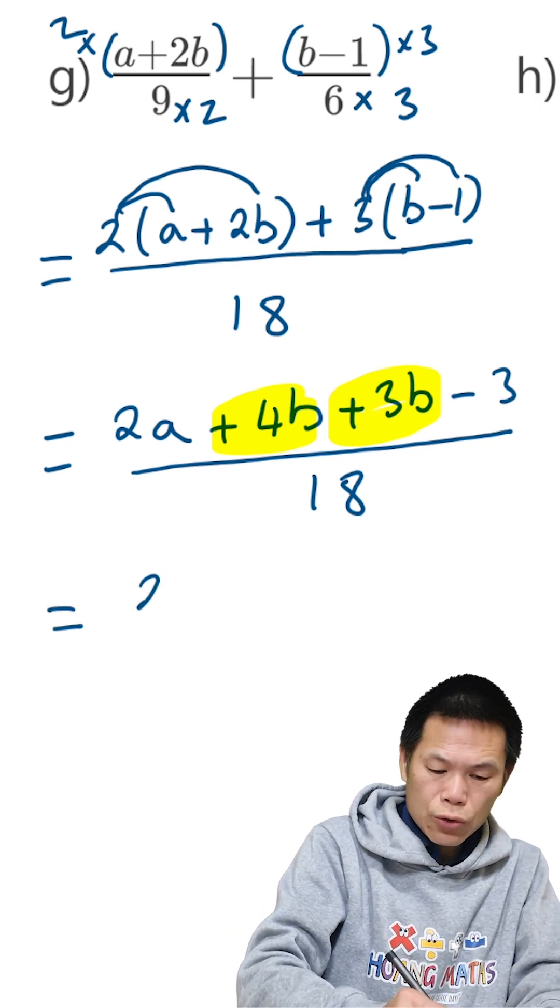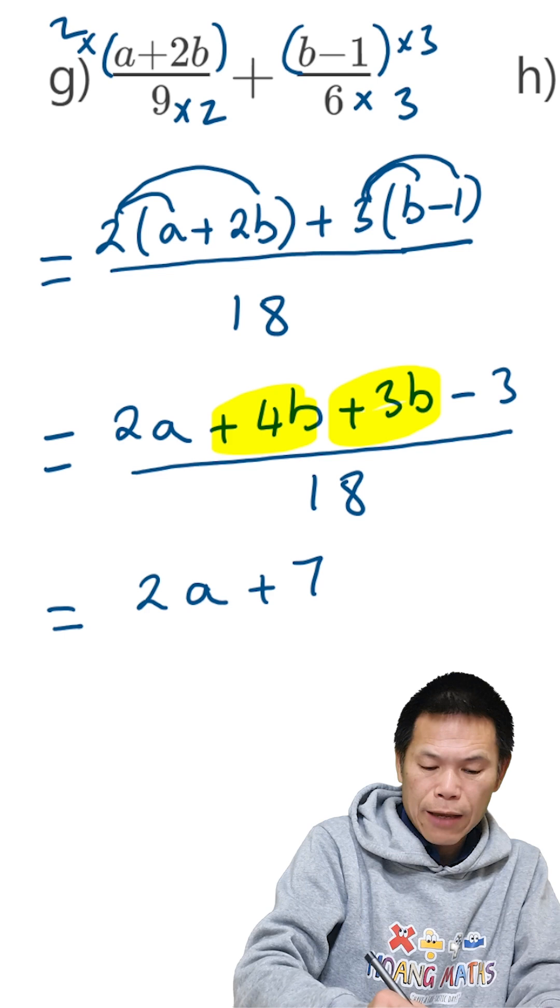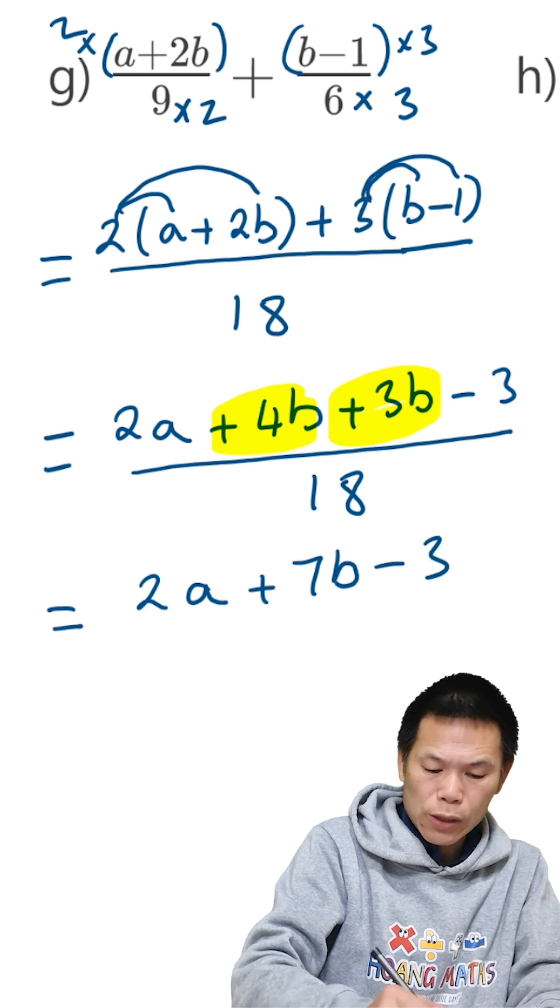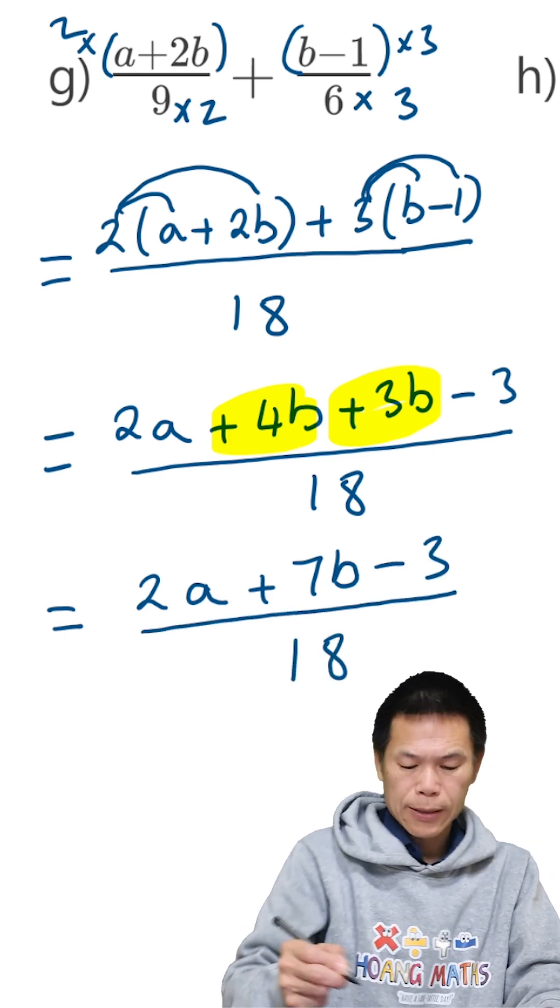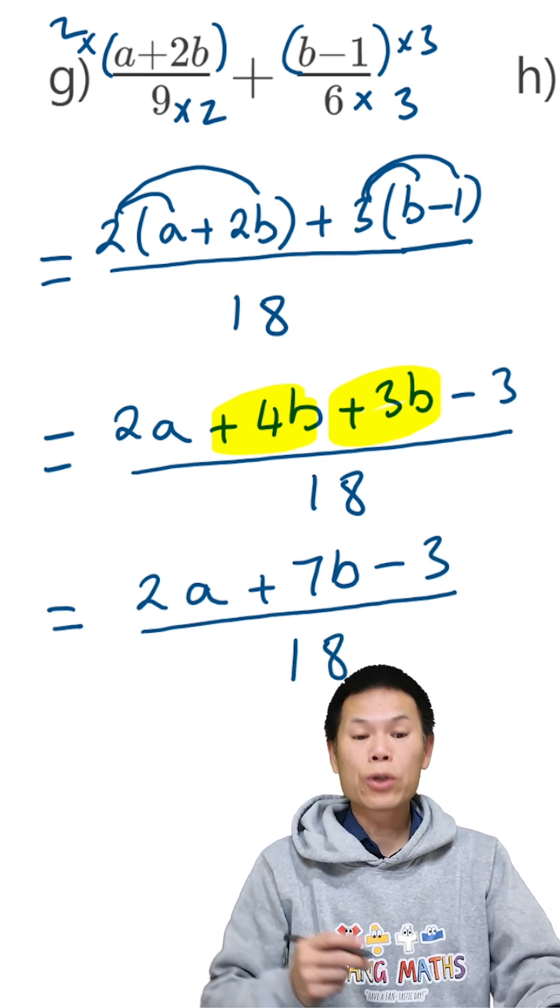So that is 2a plus 7b, minus 3, over 18.